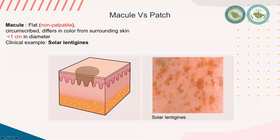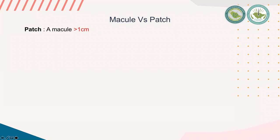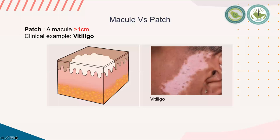A patch is like a macule — flat, non-palpable, well-circumscribed, and differing in color from the surrounding normal skin — but the main difference is that it is larger than one centimeter in diameter. A clinical example is vitiligo: we can see this hypopigmented well-circumscribed patch over the left cheek. Patches and macules could be hypo- or hyperpigmented, or any color.